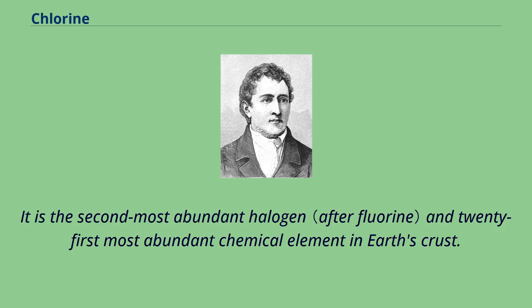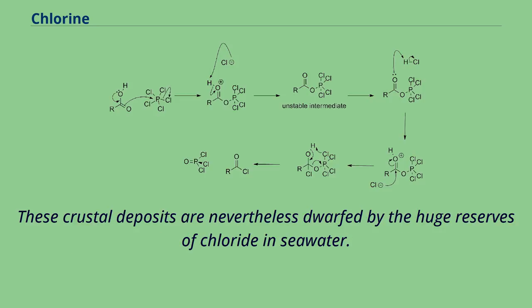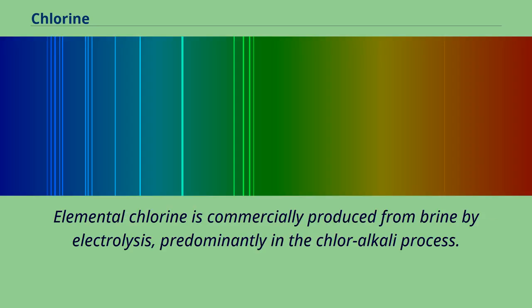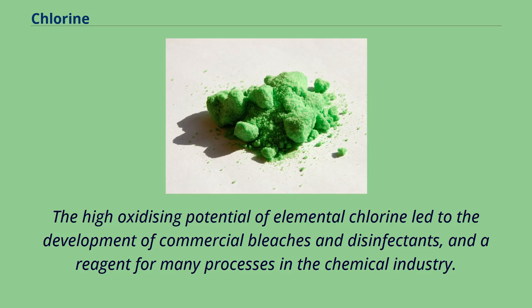Chlorine is the second most abundant halogen and 21st most abundant chemical element in Earth's crust. These crustal deposits are nevertheless dwarfed by the huge reserves of chloride in seawater. Elemental chlorine is commercially produced from brine by electrolysis, predominantly in the chloralkali process. The high oxidizing potential of elemental chlorine led to the development of commercial bleaches and disinfectants, and a reagent for many processes in the chemical industry.